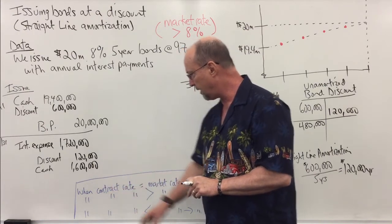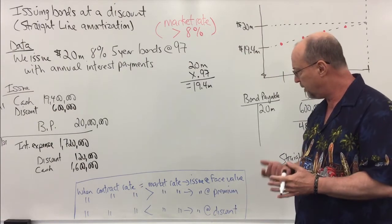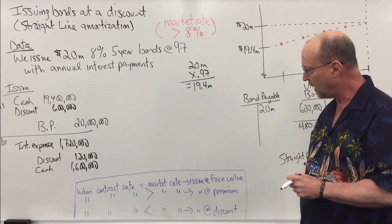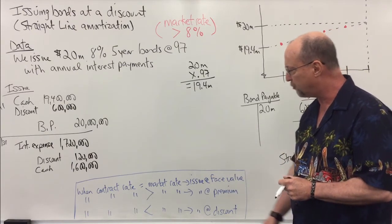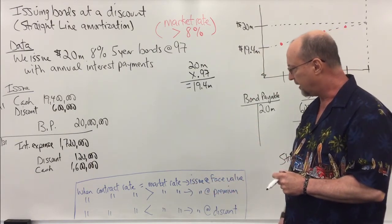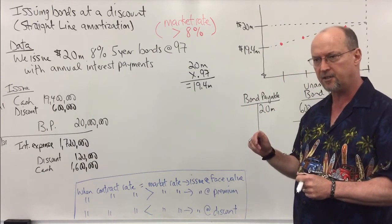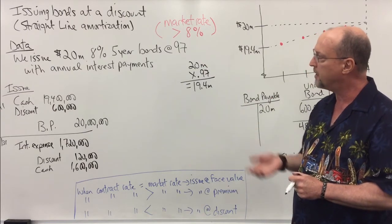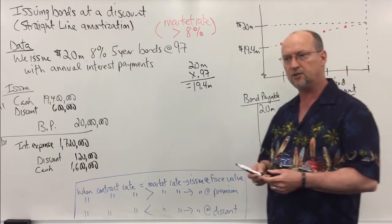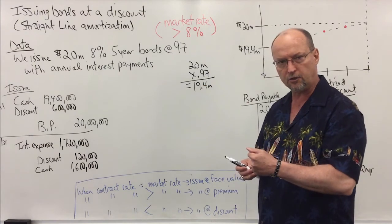Okay, look at the bottom of the board here. Notice if the contract rate and the market were identical, the same, there would be no discount or premium. We would issue the bonds at $20 million, the face value. When the contract rate is greater than the market rate, we issue bonds at a premium. And in this case, when the contract rate is less than the market rate—now we don't know specifically what the market rate is because we're taking a shortcut—but we know it's more than 8%, we have to issue the bonds at a discount.